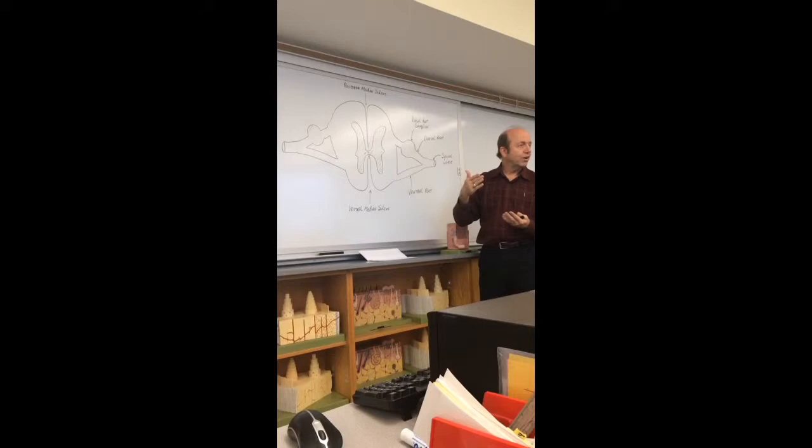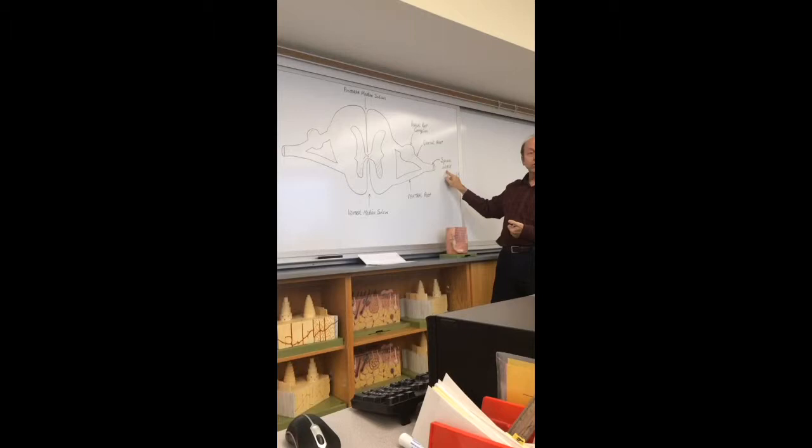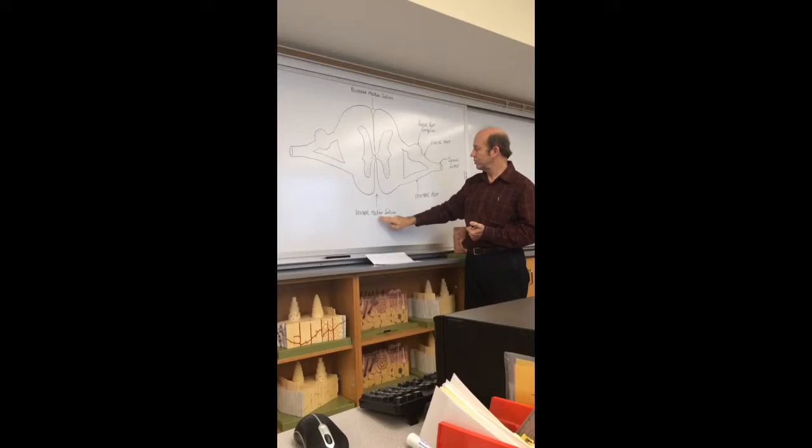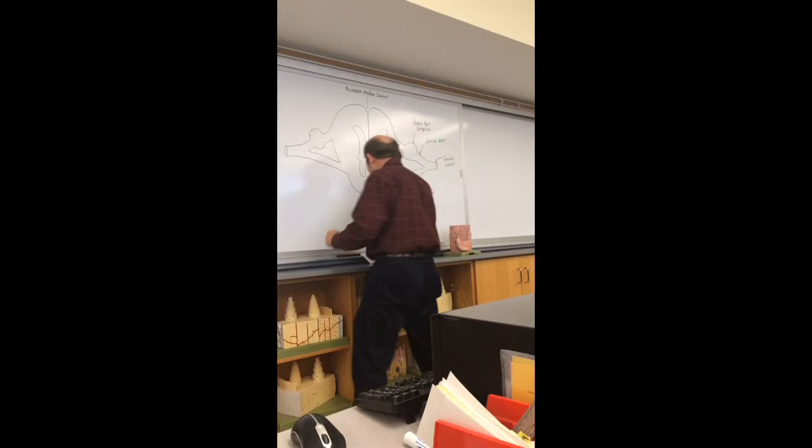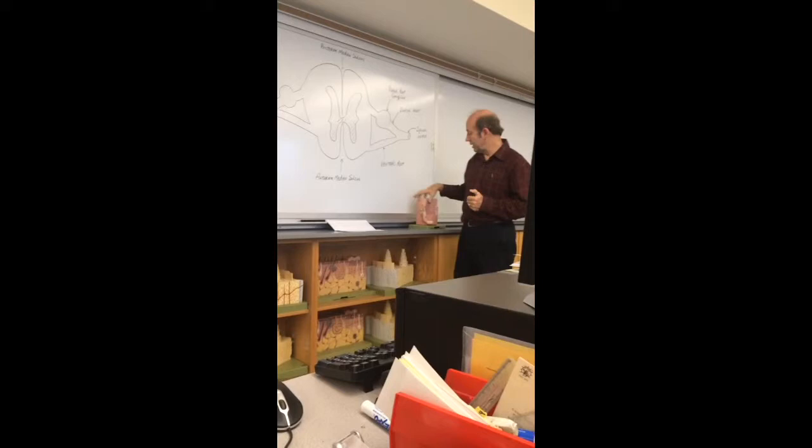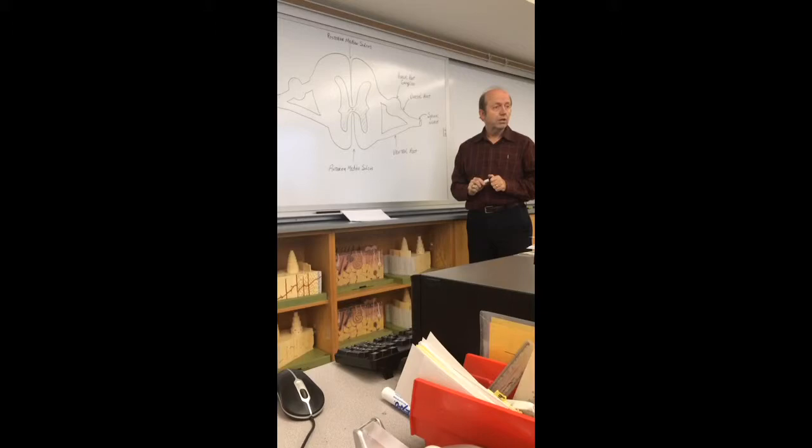Dorsal root, ventral root. Put them together. Spinal nerve. There's a dorsal root ganglion, placing the cell bodies of neurons, which I'll draw on this side. Posterior median sulcus. Good. Interesting. I was here to tell you, they don't mix them. I thought, anterior median sulcus. Okay. Posterior, anterior. Everybody okay so far? Any questions?